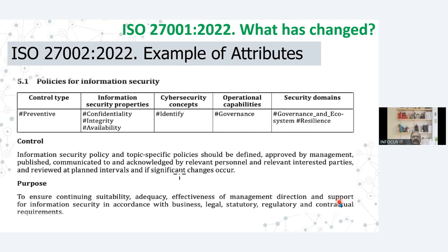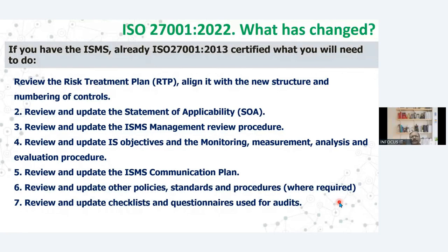An example of a policy for information security has been given — what is the attribute that would be there, then the control and the purpose. Now comes the question: if you are already certified for ISO 27001:2013, how can you move to the new version and what do you need to do? So into your ISMS framework, right from clause 4 to 10 and Annex A control, since we have seen that Annex A is totally shuffled and the domains are changed.